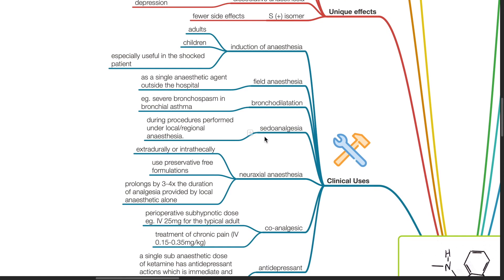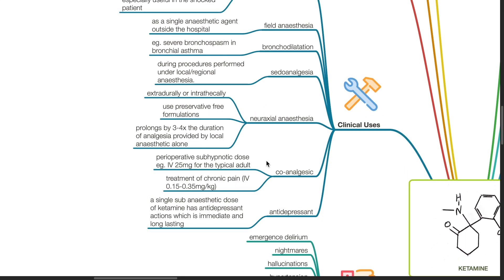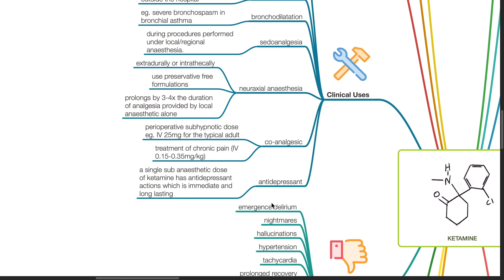For pseudo analgesia during procedures performed under local or regional anesthesia. For neuraxial anesthesia extradurally or intrathecally. Use preservative-free formulations. Ketamine prolongs the duration of analgesia provided by local anesthetics by 3-4 times. Avoid its use in young children due to concerns for neurotoxicity. Ketamine can be used as a co-analgesic at a dose of 0.15 to 0.35 mg per kg. A single sub-anesthetic dose of ketamine has antidepressant actions which are immediate and long-lasting.